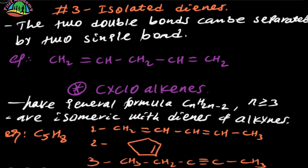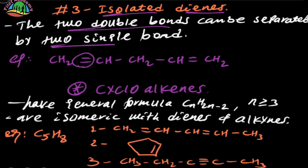The next type of Dynes is Isolated Dynes. The two double bonds are separated by two or more single bonds. These double bonds are isolated from each other.